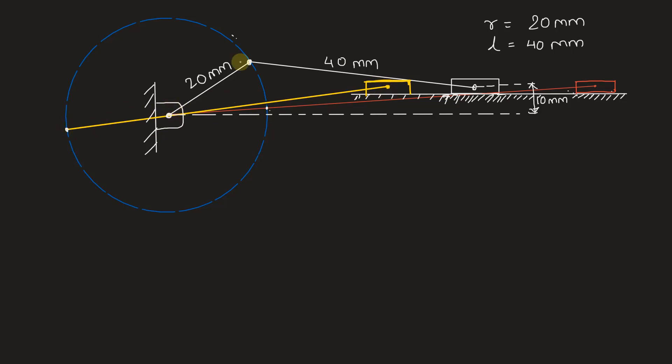Now we are being asked to find out the quick return ratio QRR, which is given by beta by alpha, where beta is nothing but this angle in the rightmost position, and when the slider again goes in the rightmost position, this angle is alpha. Now we can clearly see beta plus alpha completes the circle.